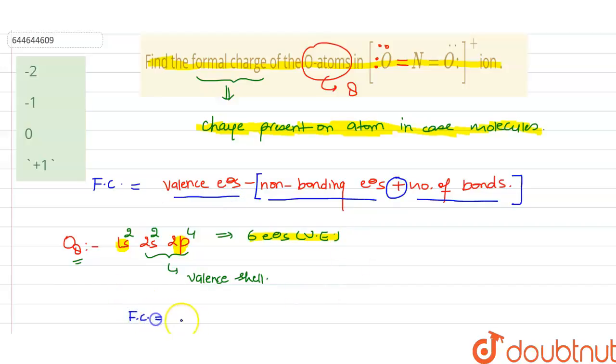It is 4 plus number of bonds is equal to 2. So from here we can say that formal charge is equal to 6 minus 6 is equal to zero.